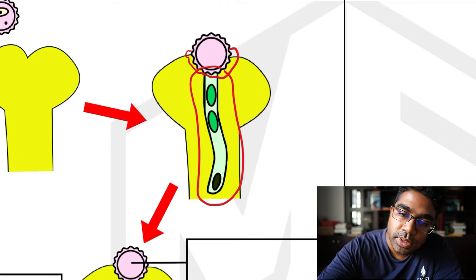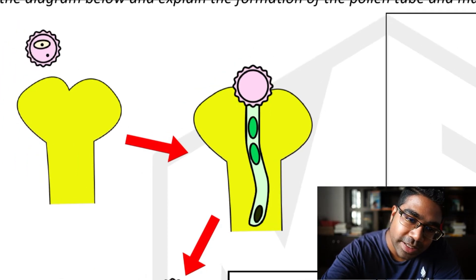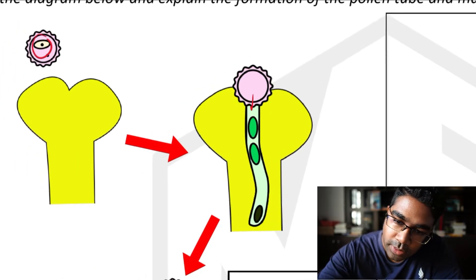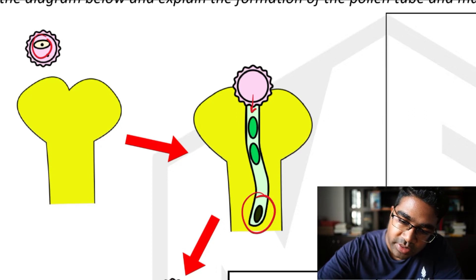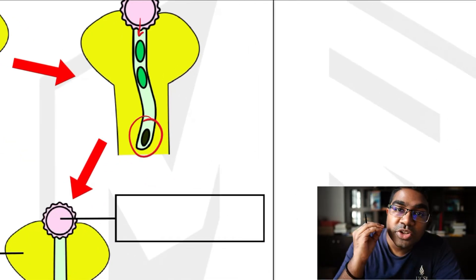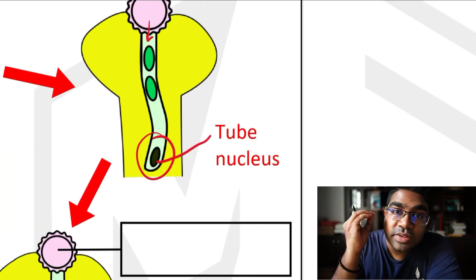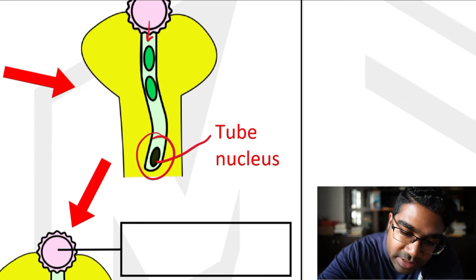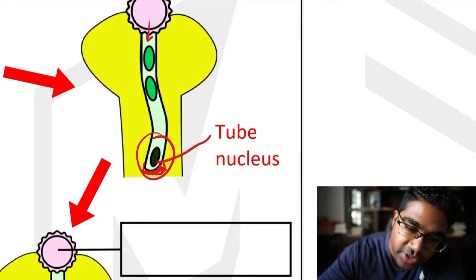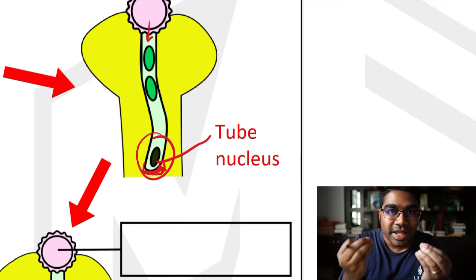And so now the nuclei that was inside will go down into the pollen tube. And this is led by this nucleus here. This is the tube nucleus. The tube nucleus is responsible for generating the pollen tube. And it does this by secreting enzymes that are able to digest and break down the style tissue.